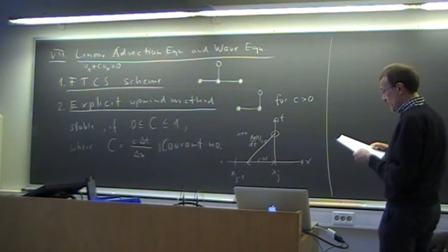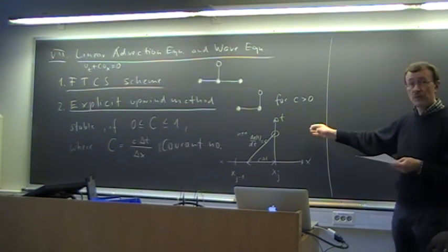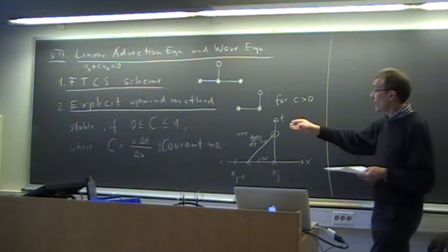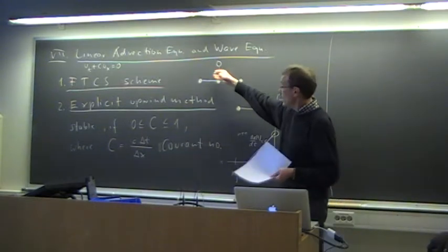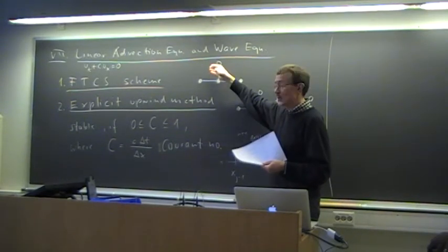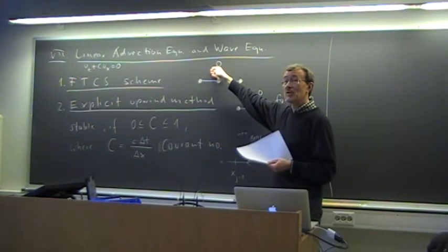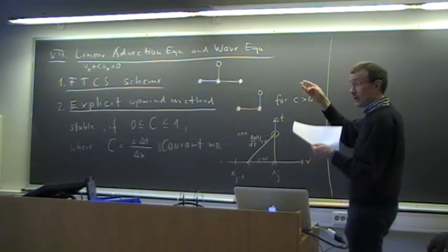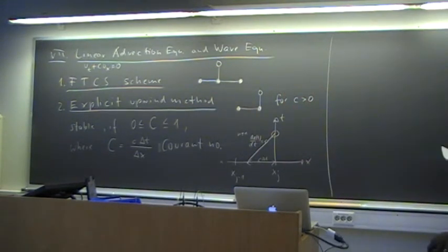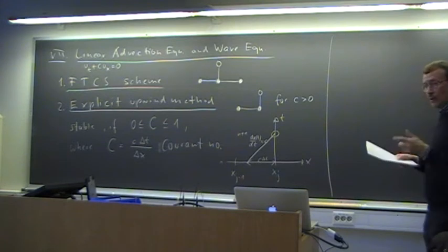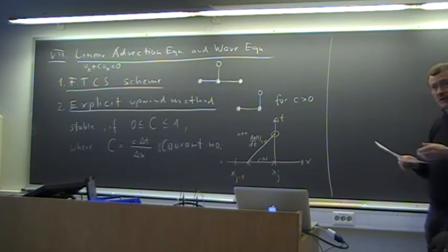That was the scheme that is useful. However, it is only first order in time and space. The forward time-centered space scheme is useless but is first order in time and second order in space — we cannot use it. But we can use it when we replace the explicit Euler method by the Runge-Kutta method, for example the third or fourth order Runge-Kutta method. Then it works fine, but that is three or four times the work of the explicit Euler.